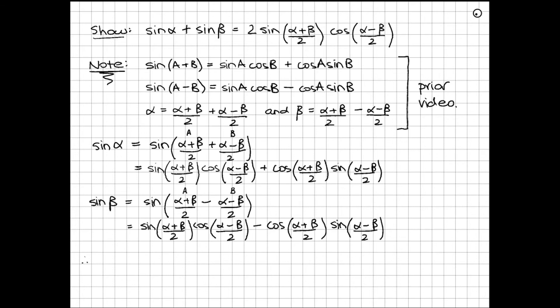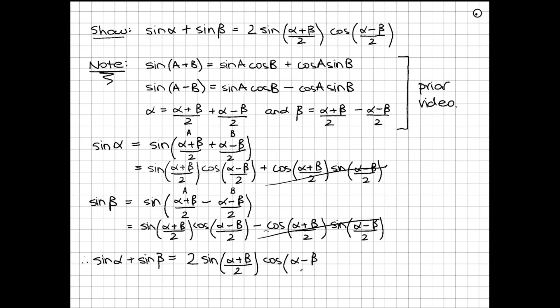Now we can think of sine alpha plus sine beta as simply adding up these two long-form results. We can already see that in both sine alpha and sine beta, we have the term sine((α+β)/2)·cos((α−β)/2), so we've got two of those. And the cos((α+β)/2)·sin((α−β)/2) term appears once positive and once negative, so those two cancel. We're just left with 2·sine((α+β)/2)·cos((α−β)/2), which is exactly what we were trying to show.